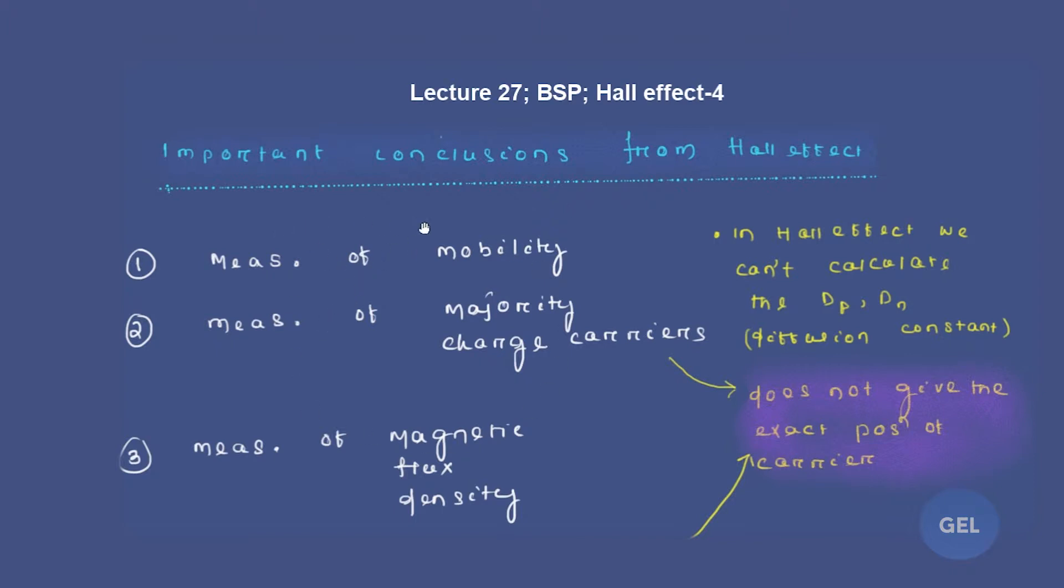Starting with the first conclusion: through Hall effect, the measurement of mobility is possible. That's what we discussed in our second video lecture. Measurement of majority of charge carriers is also possible.